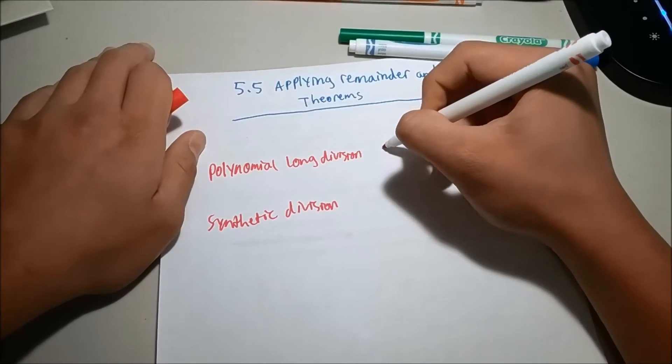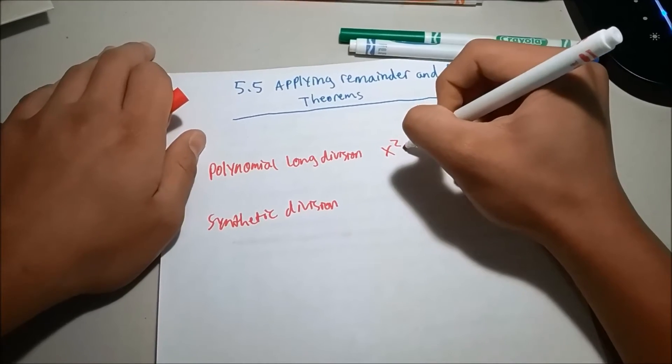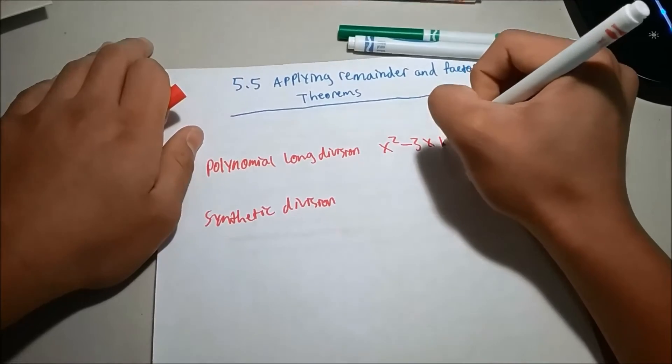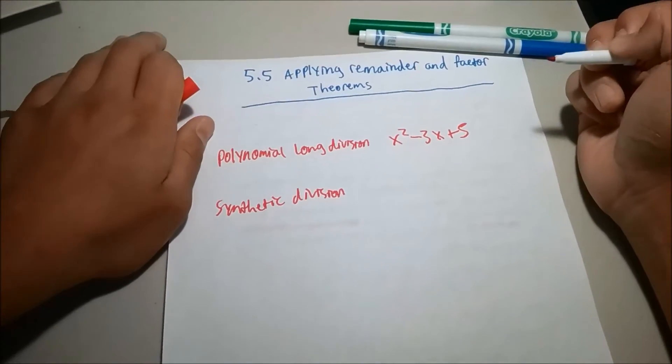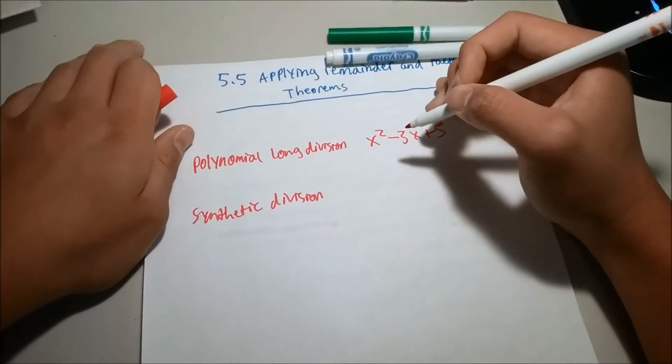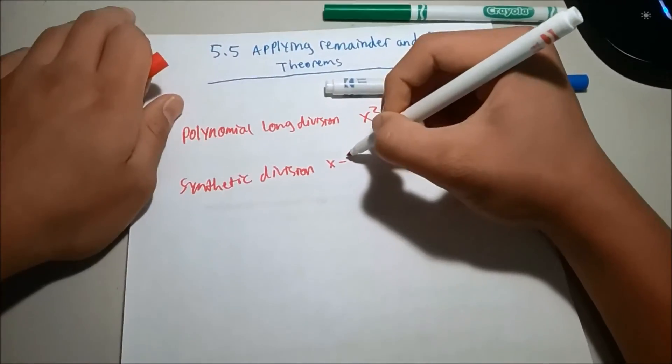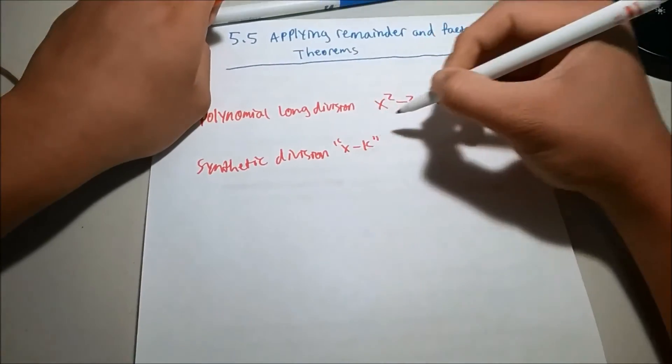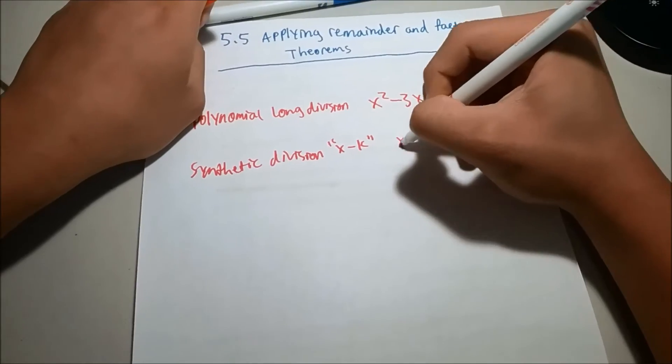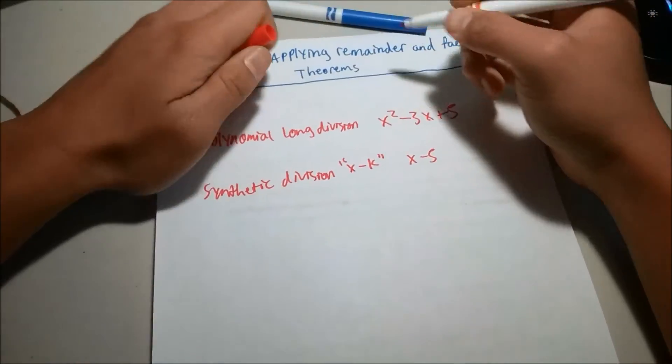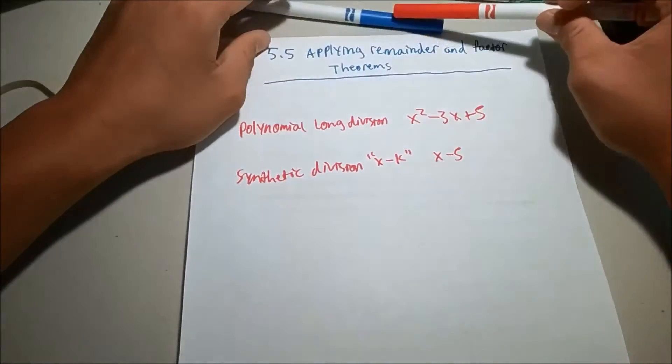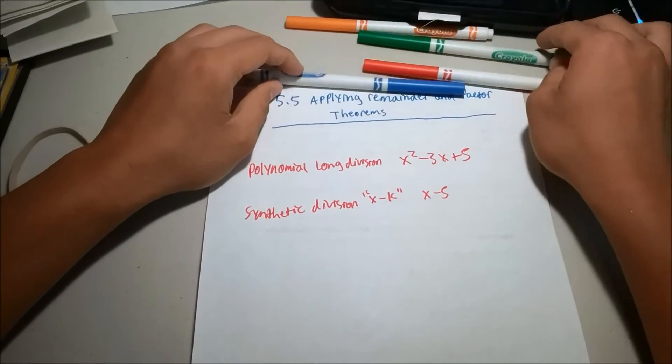This is because polynomial long division is used when the divisor is in the polynomial form. So, for example, x squared minus 3x plus 5. Synthetic division, however, is used when the divisor is in x minus k format. For this lesson, the objective is to learn how to divide polynomials through synthetic division.